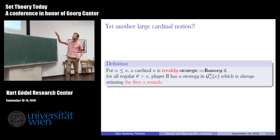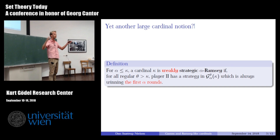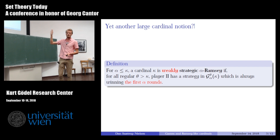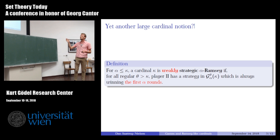For the purpose of this talk we also say κ is weakly strategic α-Ramsey if the same thing holds but only where the strategy is winning for the first α rounds. Remember the game was α+1 many rounds, so the only difference is that we do not require the last measure μ_α to have a well-founded ultrapower — otherwise it is completely the same.